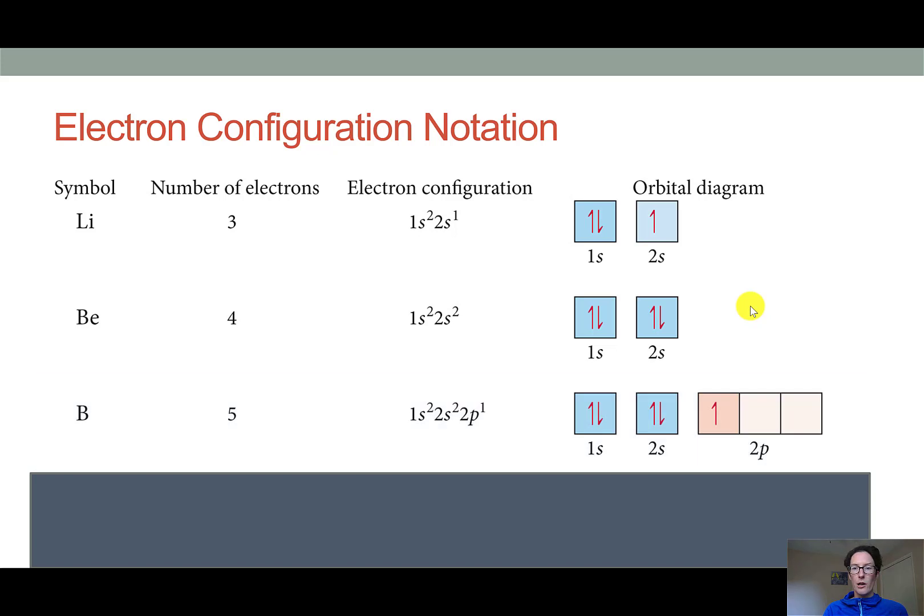When we come to boron, we have a fifth electron, and so it needs to go to the next lowest energy level. So that would be the 2p orbital. The p orbitals have three orientations, so there's the three degenerate levels. So the electron can go into any one of these three boxes. However, you will notice that we typically write the unpaired electron as an upward spin.